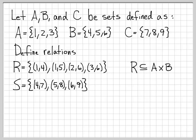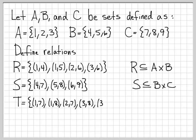S is another relation where the first coordinate always comes from B and the second coordinate always comes from set C. So S is a relation from B to C, because S is a subset of the Cartesian product B×C. Finally, we define relation T, which consists of 5 elements. T is a relation from A to C, because the first coordinate of each element always comes from A and the second coordinate always comes from C. So T is a subset of A×C.